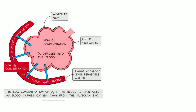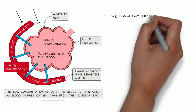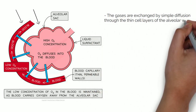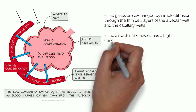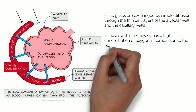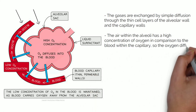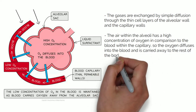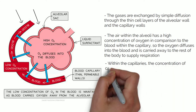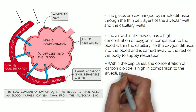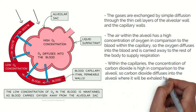The exchange of carbon dioxide and oxygen occurs between the alveoli and the capillaries in the lungs. The gases are exchanged by simple diffusion through the thin cell layers of the alveolar wall and the capillary walls. The air within the alveoli has a high concentration of oxygen compared to the blood in the capillary, so oxygen diffuses into the blood and is carried to the rest of the body. Within the capillaries, the concentration of carbon dioxide is high compared to the alveoli, so carbon dioxide diffuses into the alveoli where it will be exhaled.